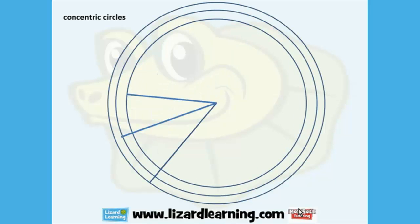On this slide we have what we call concentric circles. They are circles drawn with the same centre but with different radii.